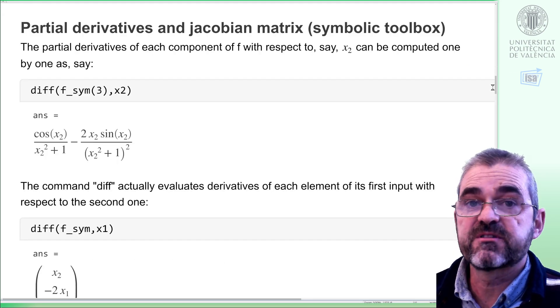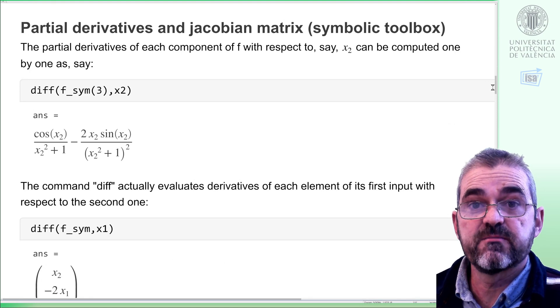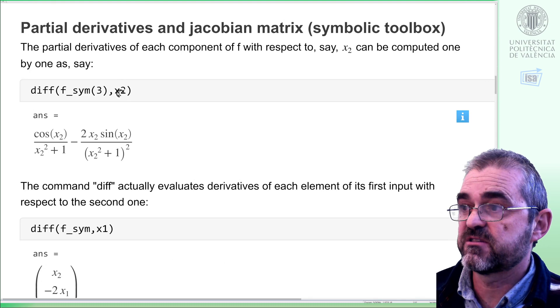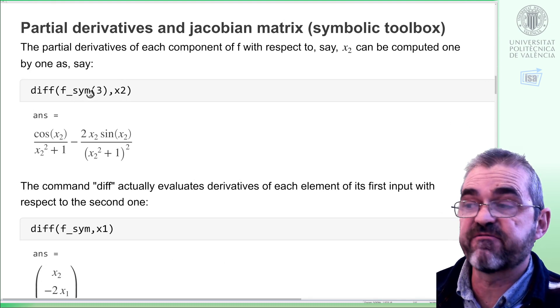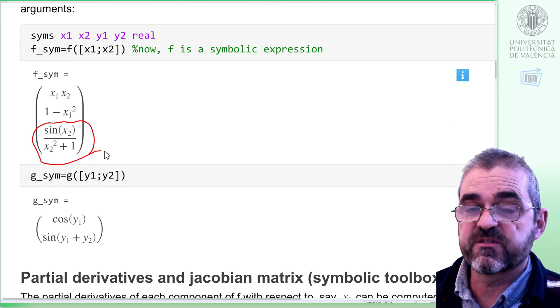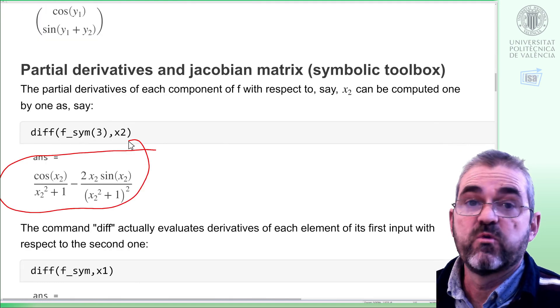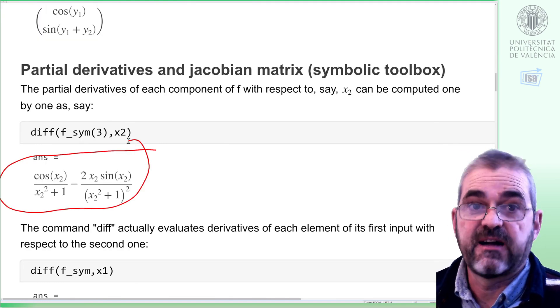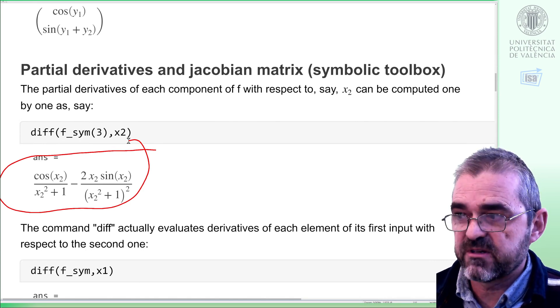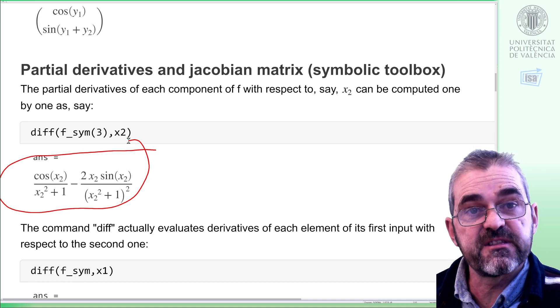diff computes the derivative of one symbolic expression with respect to a given variable. Here we have it, so this third element of f_sym, this thing, when we take the derivative with respect to x2, we get this stuff, and I really thank symbolic toolbox avoiding me the tedious way of computing this kind of things.